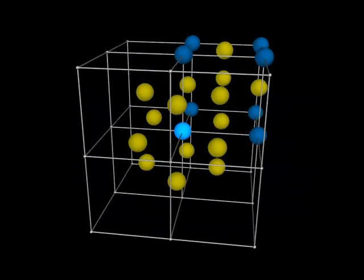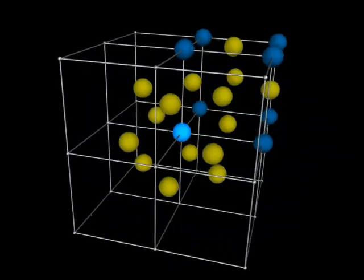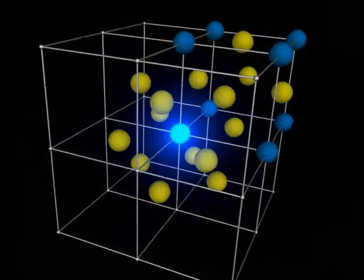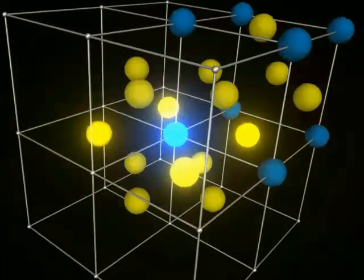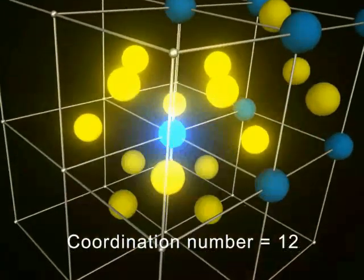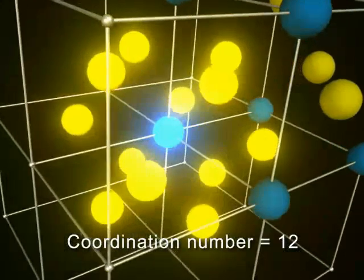In this tiny portion of a face-centered cubic array, notice that a given particle has four nearest neighbors around it, four more above and four more below for a total of twelve nearest neighbors.